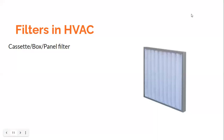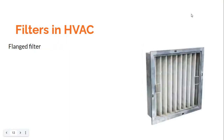This is one way of constructing a filter — look at the diagram. This is a panel type filter or a cassette type filter, usually meant for sliding fitment on a rail or track, or for use in mounting frames having hold-down clamps, or in universal filter holding frames. This kind of filter can be placed in such frames. This is a cassette type, box type, or panel type filter.